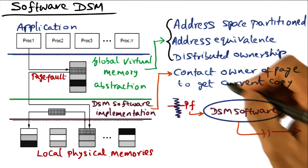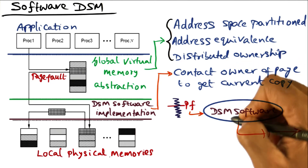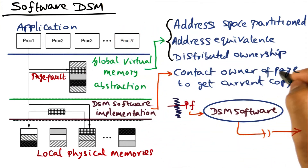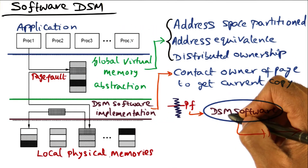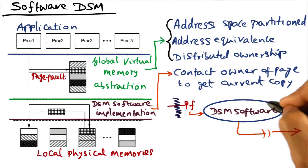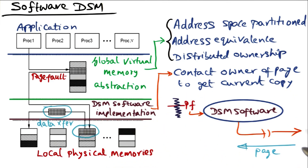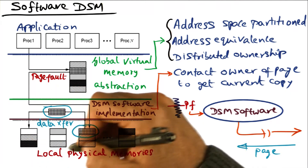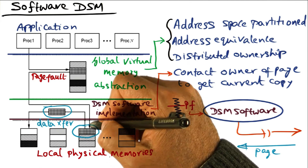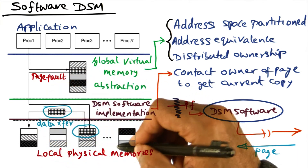What the DSM software is going to do is — it knows the owner of the page. So it's going to contact the owner of the page and ask the owner to provide the current copy of the page. The owner either itself has the current copy of the page, or it knows which node currently has the current copy. So it's going to send the page over to the node that is requesting it. The current copy of the page is over here and it's going to come over to this processor.